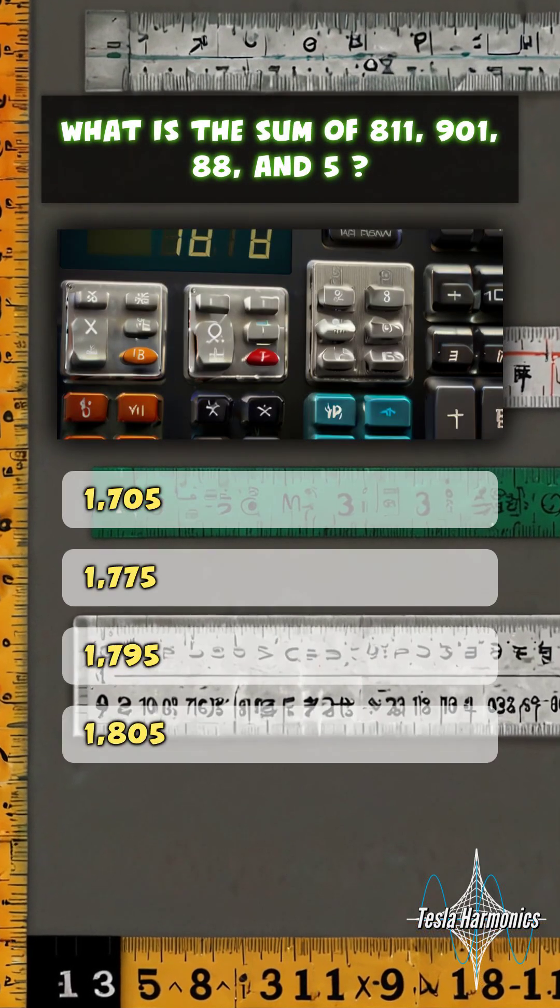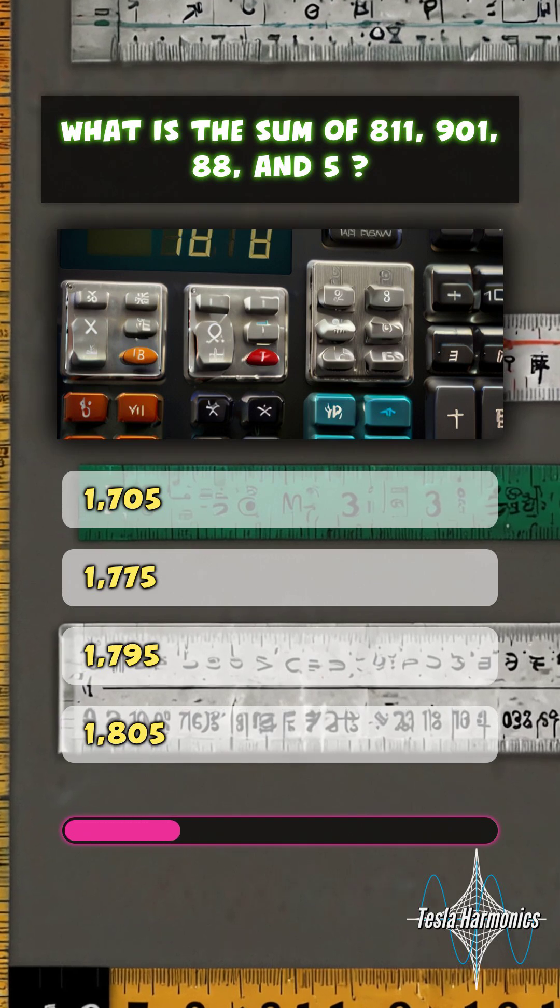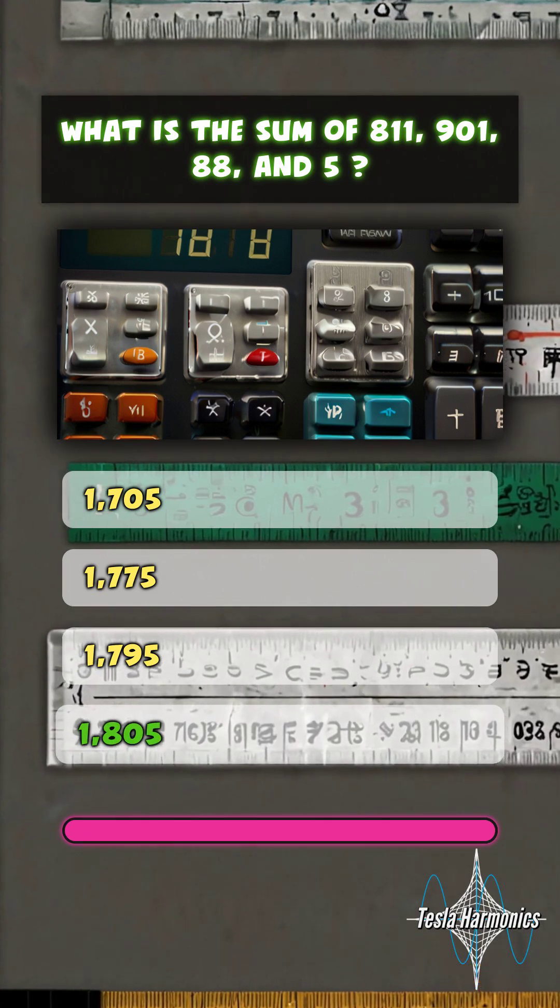What is the sum of 811, 901, 88, and 5? 1,805.